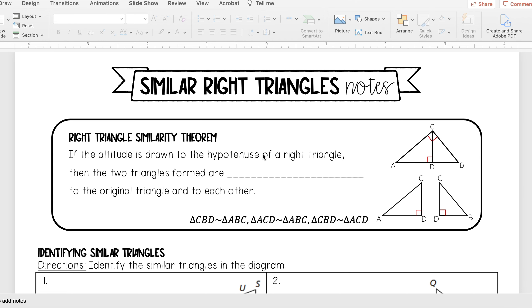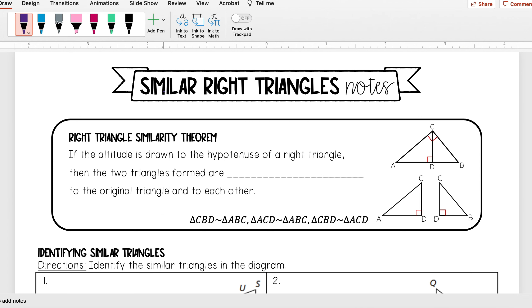Hello everyone, today we will be talking about similar right triangles. First off, we have a theorem called the right triangle similarity theorem. This tells us that if the altitude is drawn to the hypotenuse of a right triangle, then the two triangles formed are similar to the original triangle and to each other.